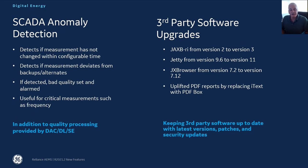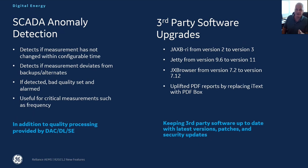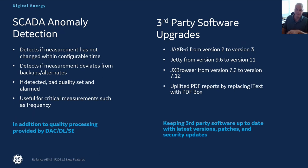Lastly, I want to talk about third-party software upgrades. This is something we do every release — we're always looking at our third-party software, making sure we have the latest versions and any CVEs or security violations remediated. Specifically, this year we looked at GAXB version 2 to 3, uplifted Jetty from version 9.6 to 11, uplifted JX Browser from version 7.2 to 7.12. One of the bigger changes was replacing a legacy iText software that was no longer current with a newer PDF box version — a semi-major uplift that affected all our PDF reporting from historical reports and various applications.